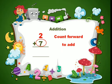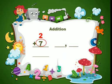Count forward to add. After 7, how many numbers do you count forward? Two numbers. You count only 2 numbers. Why, children? Because the smallest number is 2. After 7, you count forward only 2 numbers.